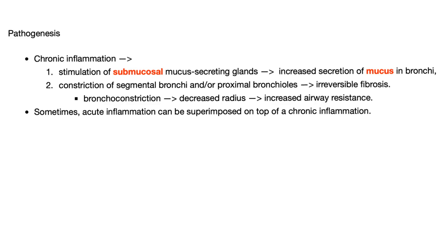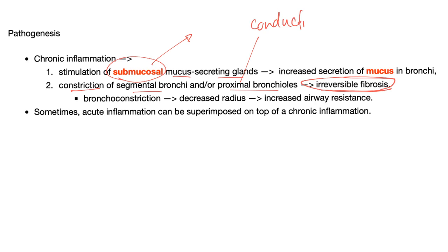Pathogenesis: chronic inflammation, stimulation of the submucosal mucus-secreting glands — that's why the patient is coughing tons of mucus. Constriction of segmental bronchi and proximal bronchioles in the conducting zone, leading to irreversible fibrosis. Bronchoconstriction decreases the radius, and airway resistance is inversely proportional to radius. Decrease the radius, you increase the resistance.